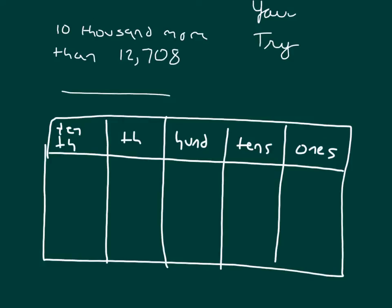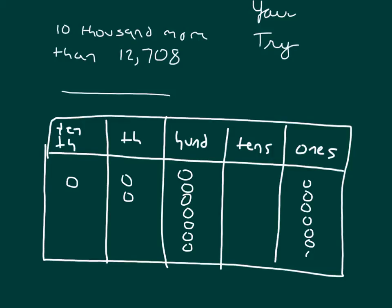Okay, it's your turn to try. Let's work on this problem: 10,000 more than 12,708. Draw yourself a place value chart and model that number — pause the video. I'm modeling that number: eight ones. Is that what you did? Next, it says 10,000 more, meaning we are going for a sum — 10,000 plus 12,708.